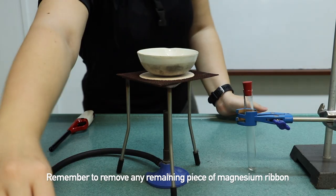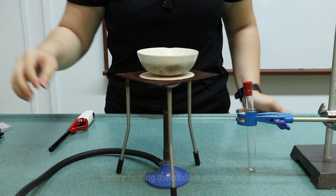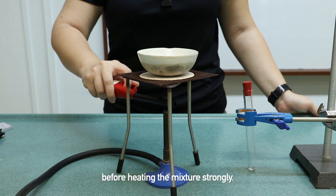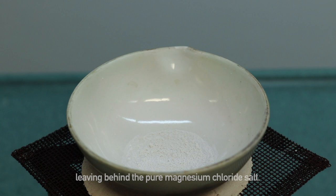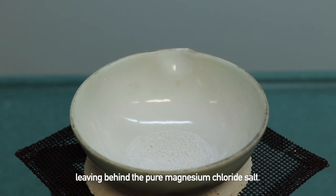Remember to remove any remaining piece of magnesium ribbon before heating the mixture strongly. Over time, the water boils off, leaving behind the pure magnesium chloride salt.